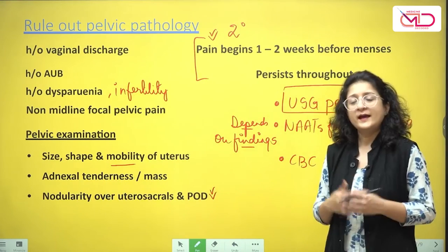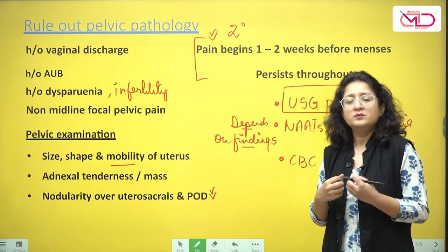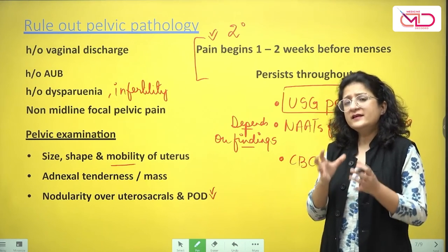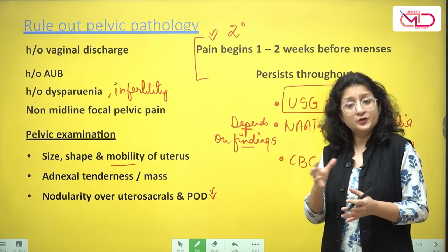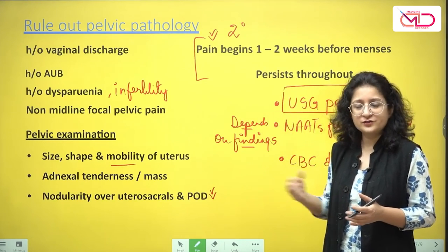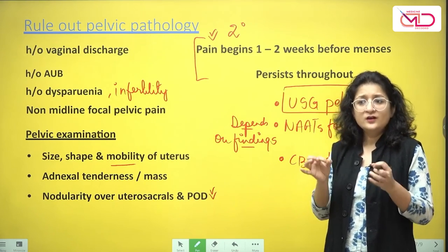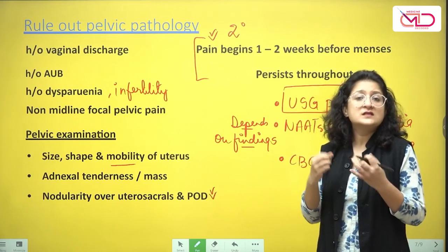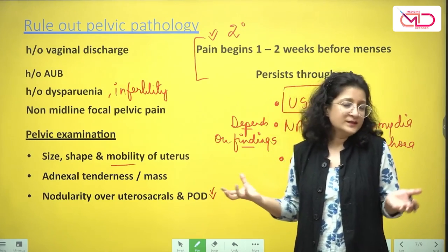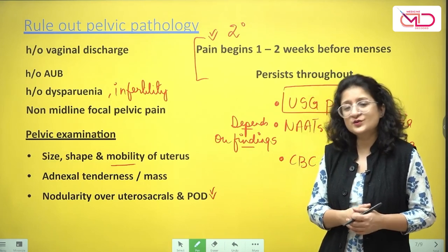If women are started on NSAIDs for dysmenorrhea and after three to six months the pain has not improved or has worsened, endometriosis should be the top priority diagnosis. Treatment of secondary dysmenorrhea should be catered to the underlying pathology and underlying cause, as each gynecological condition is managed differently. This concludes the discussion on dysmenorrhea — I hope you found this video useful.